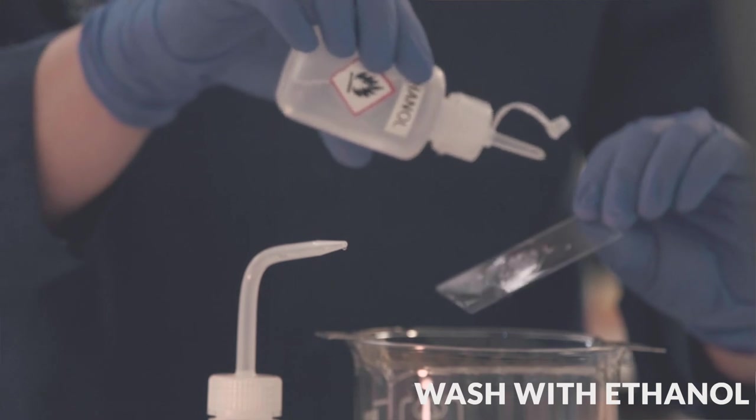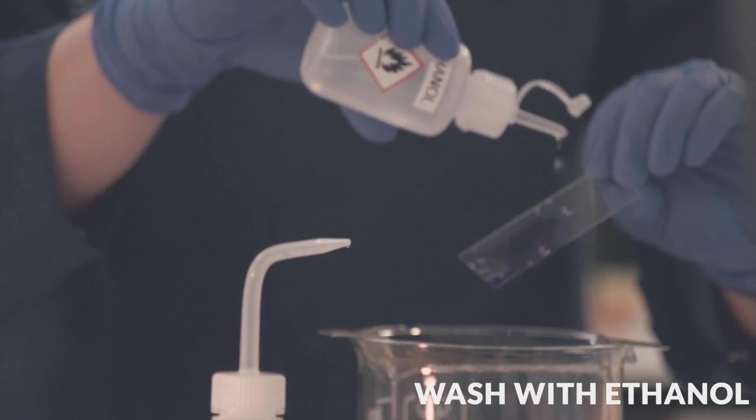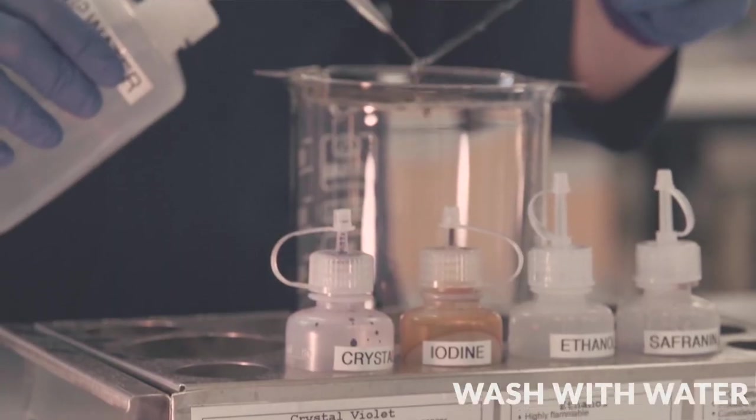The sample is then washed with ethanol which will remove the outer membrane from gram negative bacteria. Wash off any excess ethanol with water.